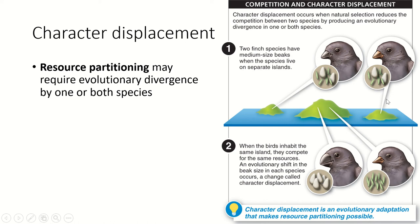An example of character displacement comes from the finches of the Galapagos Islands — the finches Darwin studied — which have been studied for about 40 to 50 years by a research group led by Richard and Rosemary Grant. Here are two finches that both have medium-sized beaks when they live on islands where they're the only species eating those seeds. On those islands, they can eat both large seeds and small seeds. On a center island where both species live together, competing for all the seeds, neither does as well. What has happened is that in one species, birds with bigger beaks monopolized the bigger seeds and passed on that gene.